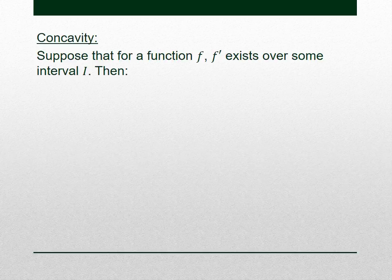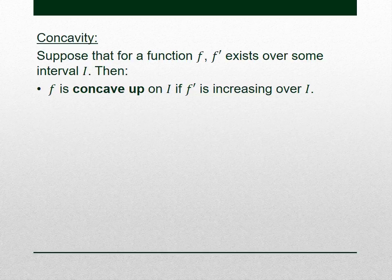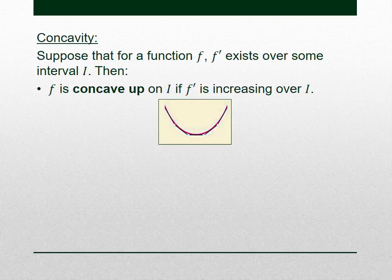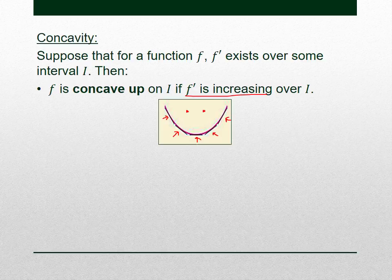So, concavity — what is that? If the derivative f prime exists over some interval, we say f is concave up on that interval if the derivative is increasing. A way to remember that: concave up looks like a cup or a smiley face. The derivative gives you the slope of the tangent lines, so looking at those tangent lines, the slopes go from negative on the left, to zero, to positive — they are increasing. That's what it looks like when a function is concave up.